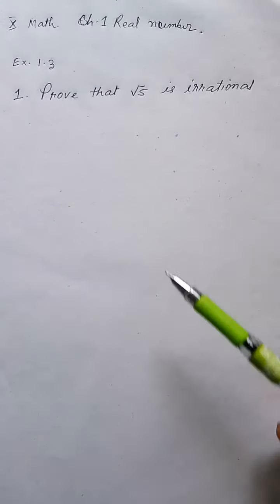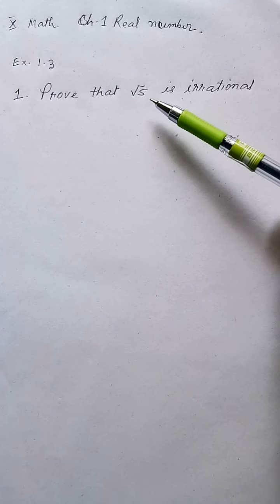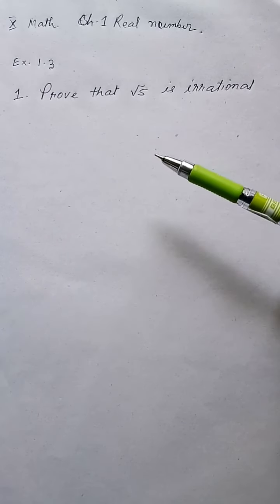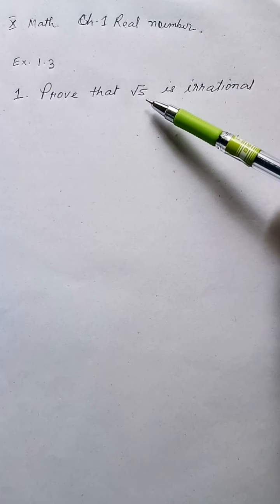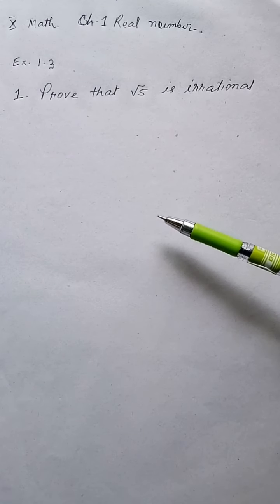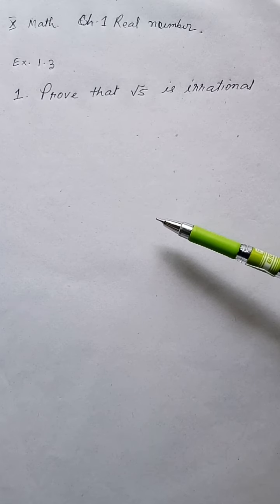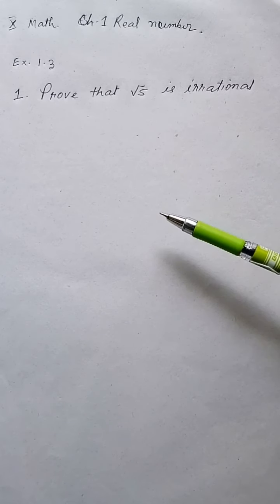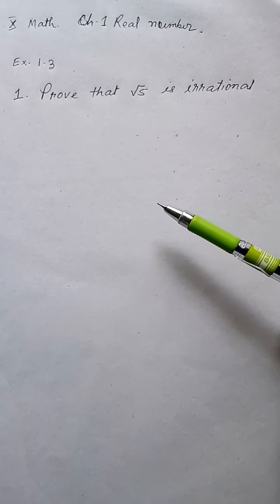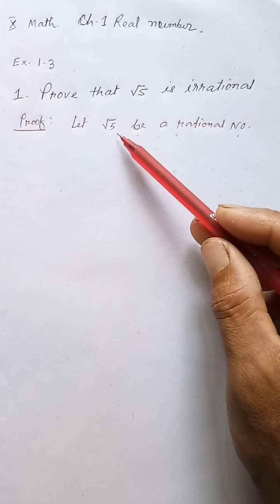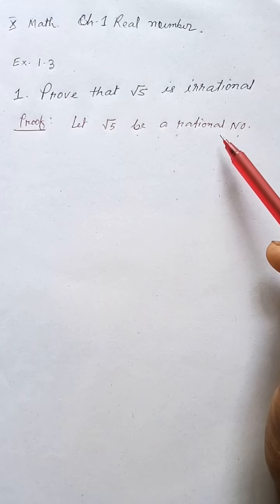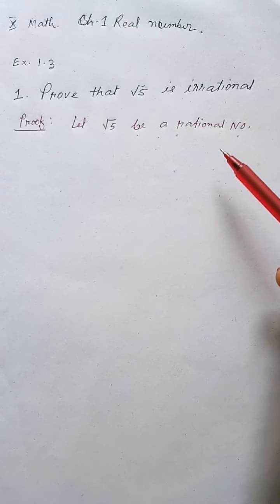What we shall do is take this root 5 as rational — we'll take the contrary. That is, root 5 is irrational, but we'll assume it as rational and follow some mathematical steps to check whether it is possible to be rational or not, then we'll decide.